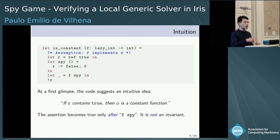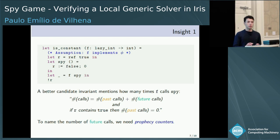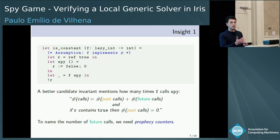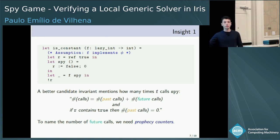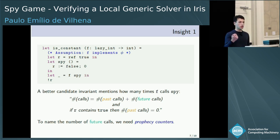A better candidate for an invariant is one that includes the number of times that spy is called. The total amount of times spy is called during the execution of is_constant equals the number of times it has been called plus the number of times it will be called. Another assertion in the invariant says that if r contains true, then the number of past times it has been called is zero. But now we have another problem: how do we count the number of times that spy will be called? For that we are going to use what are called prophecy counters.